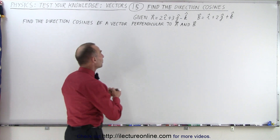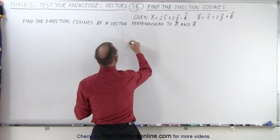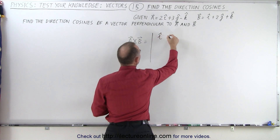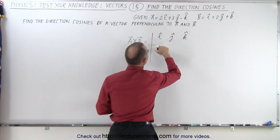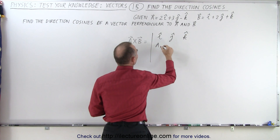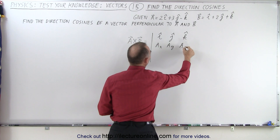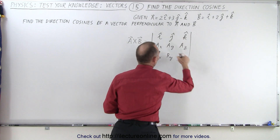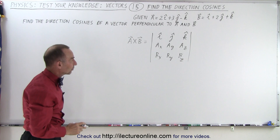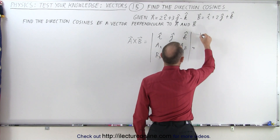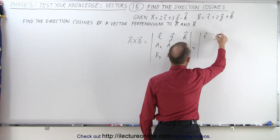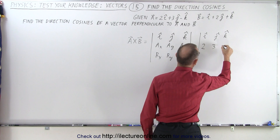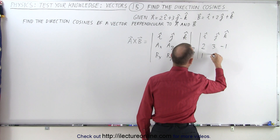So let's go ahead and find the cross product. Starting with a cross b, that is equal to the determinant with i, j, k in the first row, then a_x, a_y, a_z in the second row, and b_x, b_y, b_z in the third row. So a_x equals 2, a_y is 3, and a_z is minus 1, and b has components 1, 2, and 1.